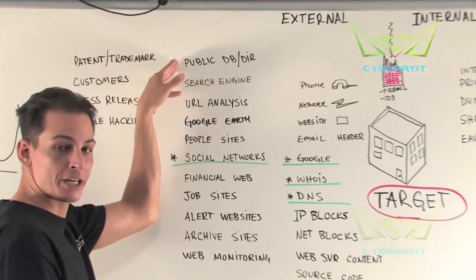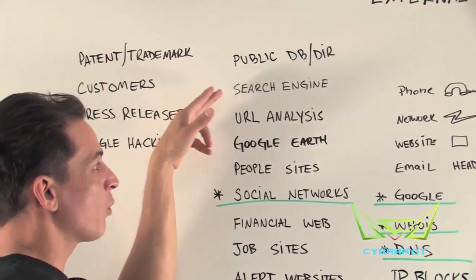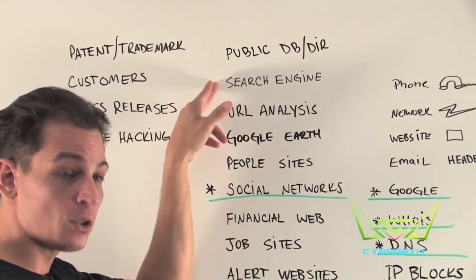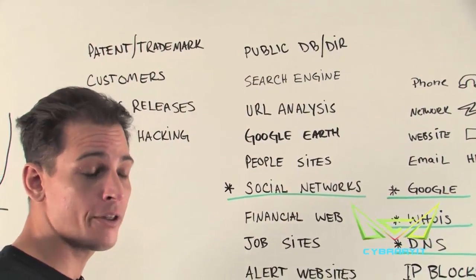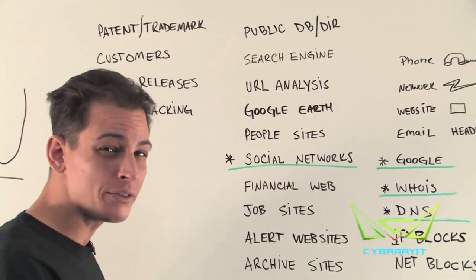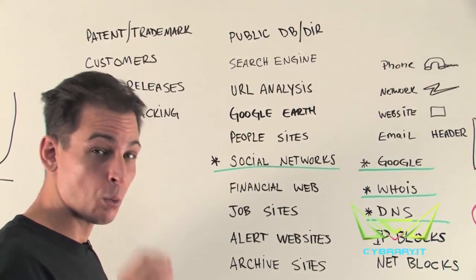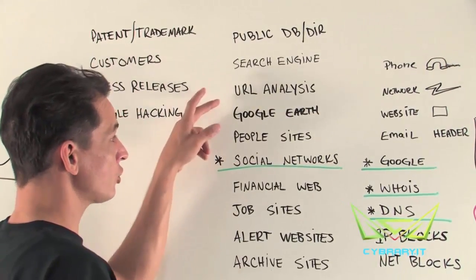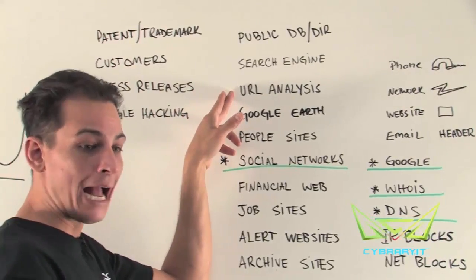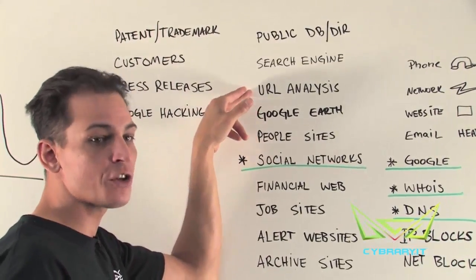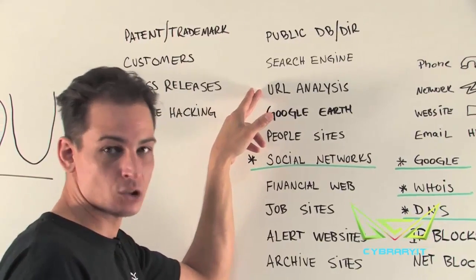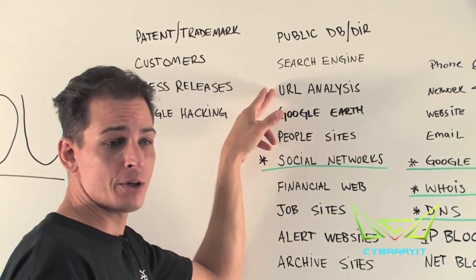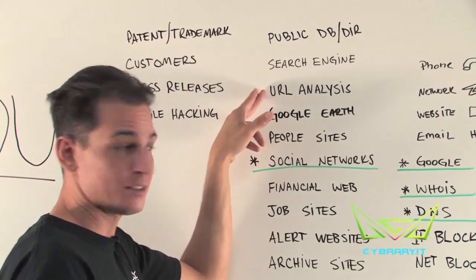Also, publicly, we look at directories or databases. We're going to use search engines — and not just Google. Sometimes Google displays only a handful of results, but there are other search engines and we need to use all of them, because in many cases we're looking for that one tiny piece of information. If we can use that one tiny piece that wasn't on Google, it may lead to a compromise. Also, URL analysis — how are their URLs laid out? What are they disclosing in the URL versus what are they not disclosing? We can learn how seriously they take security just by what they're allowing the end user to see.